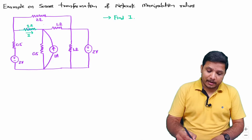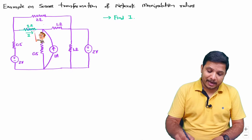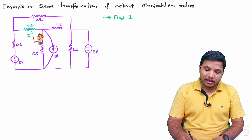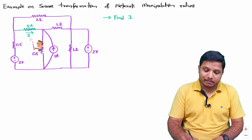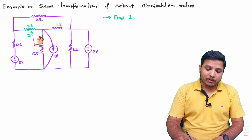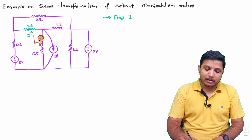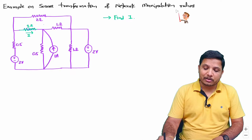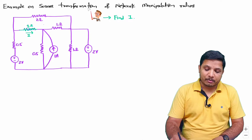We have been given a very interesting circuit. In this circuit, through this one ohm resistor, current I is passing, and that is the case which we are dealing with — to find this current. To identify current I passing through this resistor, I will be minimizing this circuit by using network manipulation rules and source transformation.